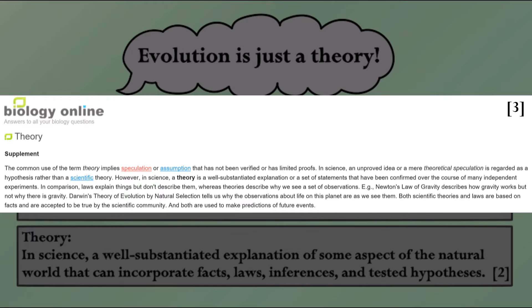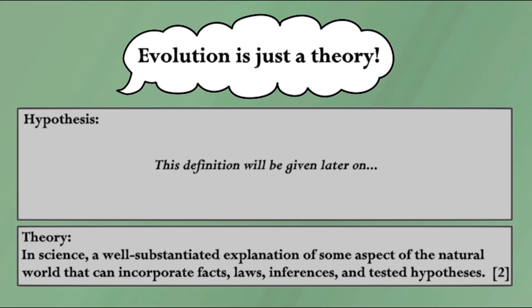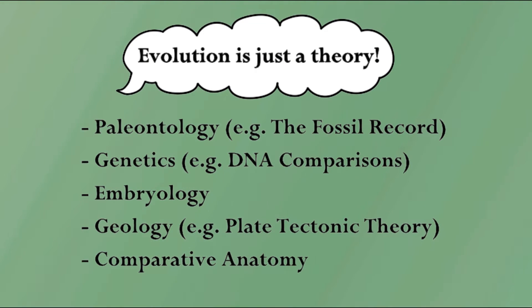In comparison, laws explain things but don't describe them, whereas theories describe why we see a set of observations. For example, Newton's law of gravity describes how gravity works but not why there is gravity. Darwin's theory of evolution by natural selection tells us why the observations about life on this planet are as we see them. Both scientific theories and laws are based on facts and are accepted as true by the scientific community, and both are used to make predictions of future events. So the theory of evolution is indeed a theory — it's an explanation of the body of observations and evidence we currently have. When someone phrases it as 'just a theory,' we know they're not understanding what theory means in a scientific context.